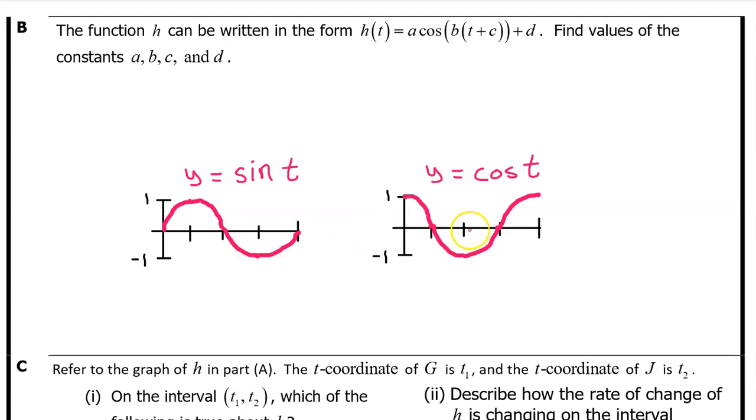I need you to memorize what the graphs of the parent functions look like for y equals sine t and y equals cosine t. Notice that at time t equals zero, sine t is on the midline and then it goes up and down. By contrast, at time t equals zero, cosine t starts off at its highest value and then it goes down and up.